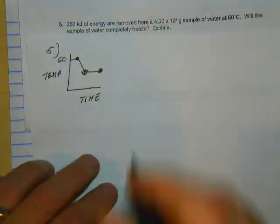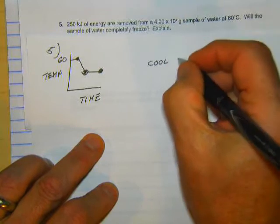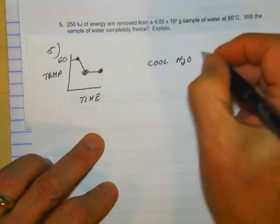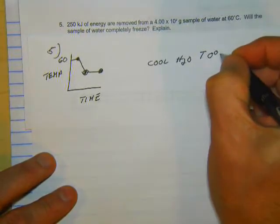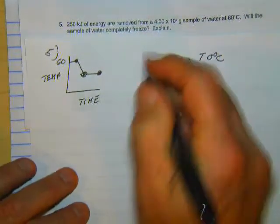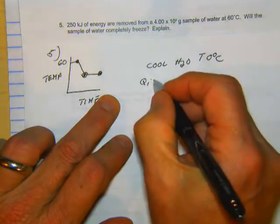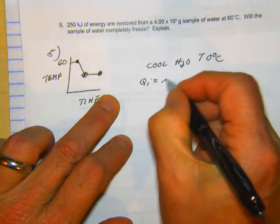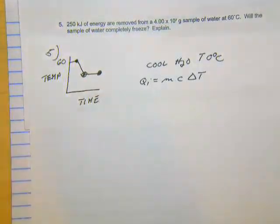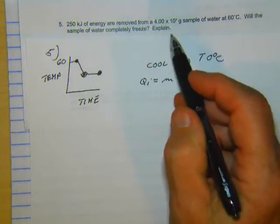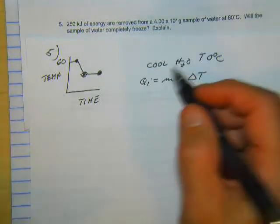Alright, so we got a cool H2O to zero degrees Celsius. Alright, so let's call this Q1 again. And we got liquid water. So Q1, so we got MC delta T. Well, four times 10 to the second actually is going to be 400.